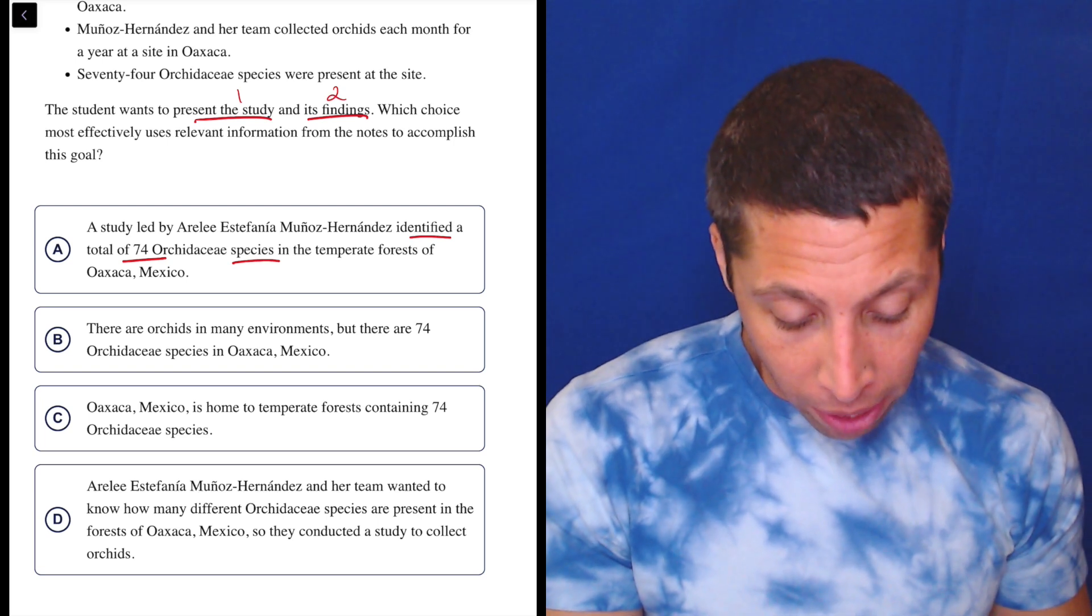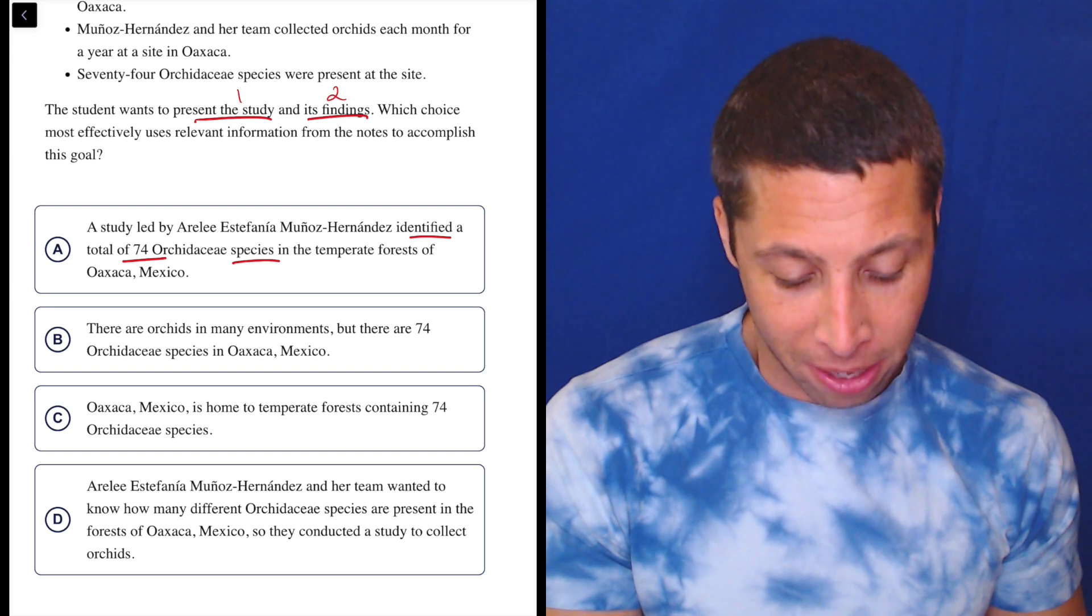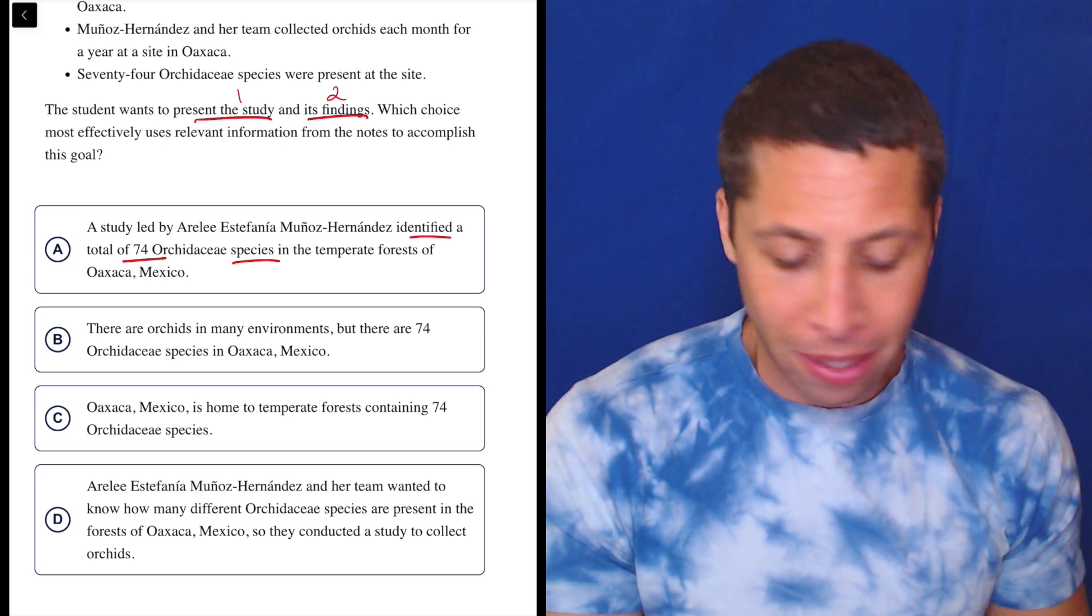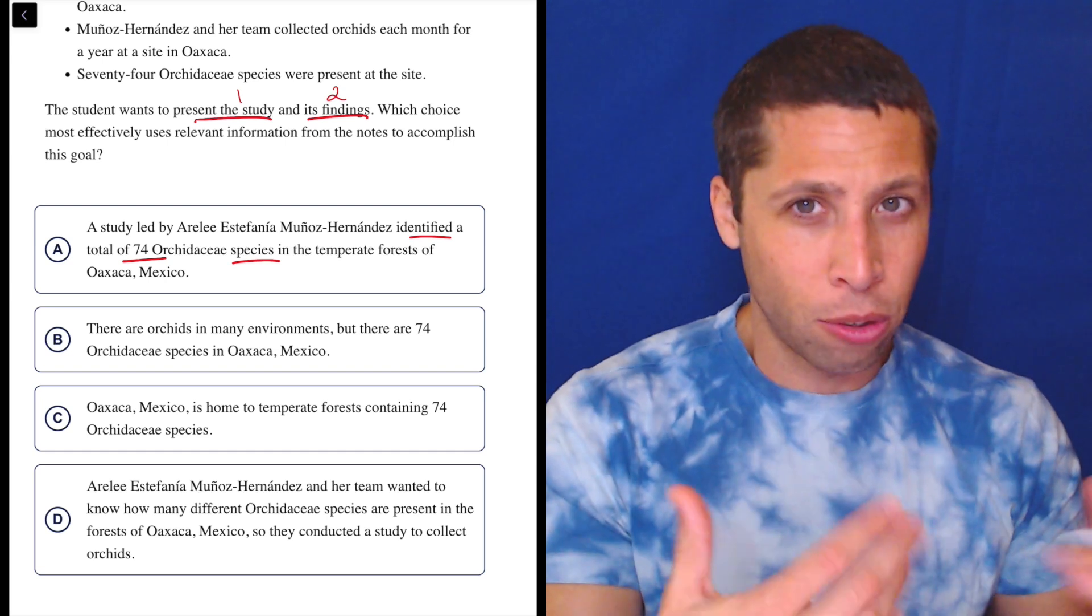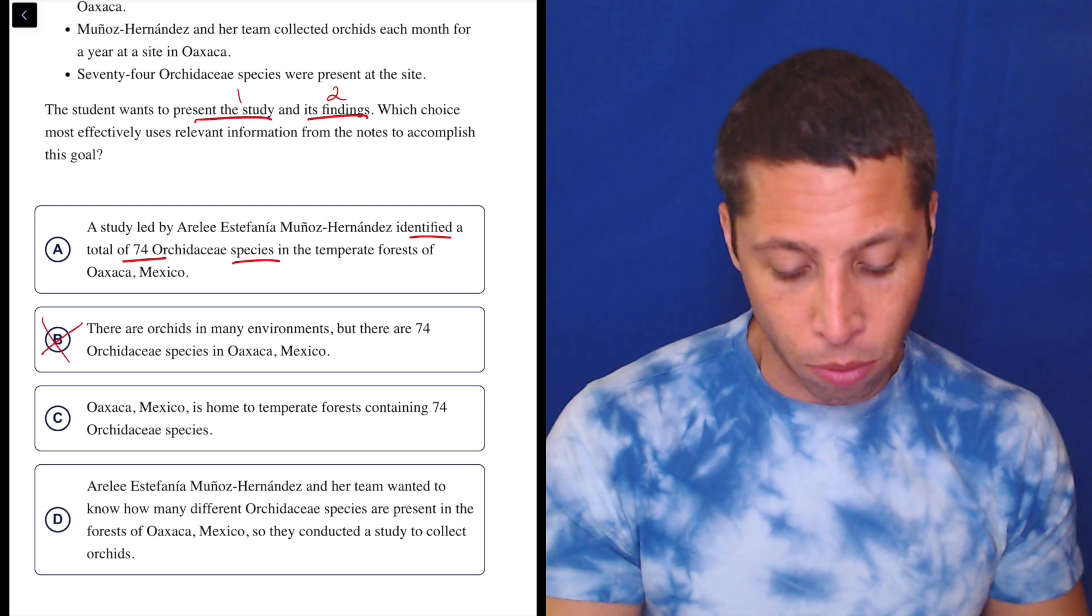Let's look at B. There are orchids in many environments, but there are 74 Orchidaceae species in Oaxaca, Mexico. Okay, but that's not talking about a study. That is not talking about those 74 as being the findings of a study. It just says it as a fact. So no, I think this is wrong.